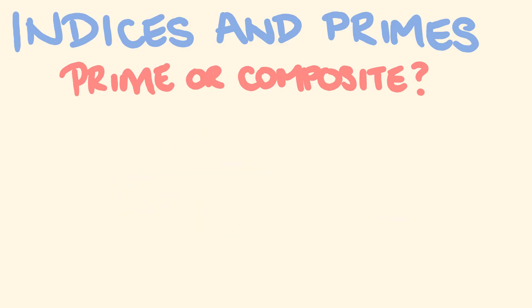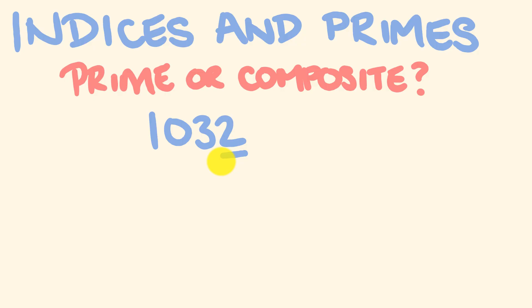What about one last, really hard example — the number 1032? Is that a prime number or a composite number? We can look at this straight away and say we know that this is a composite number. What tells us this without working out any of the factors? Because it finishes in a 2, we know it's going to be composite. Without doing any calculations, 1 and 1032 will go into it, and 2 and 516 will go into it. So we know this number is indeed composite. Anyway, we'll see you next time. Bye.